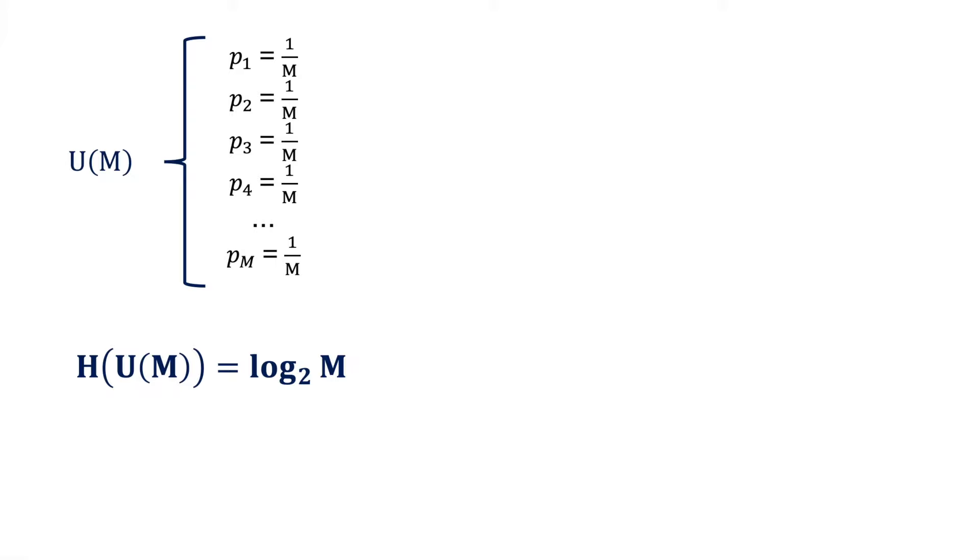We do this by associating bits to outcomes. A m uniform distribution has m possible outcomes, each with probability 1 over m. So in terms of entropy, we can interpret each outcome as needing log base 2 of 1 over p bits to encode. This can be simplified by taking the fraction out. Note that if we plug in the probability of 1 over m in, we get the expected expression of log base 2 of m.